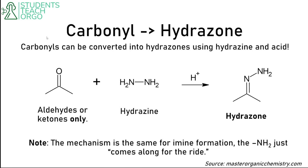Carbonyl to hydrazone: like oximes, you just have another group attached to the nitrogen that comes along for the ride. You start with an aldehyde or ketone, use hydrazine, and get a hydrazone — you form the C=N here with an NH₂ attached. The mechanism is essentially the same; you just have an NH₂ there instead of a methyl, ethyl, or similar group.